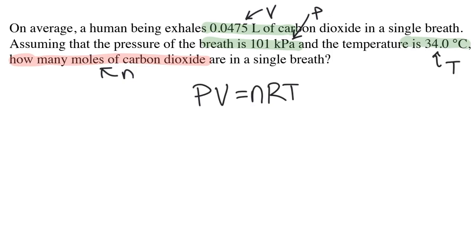We're using the ideal gas law to solve this problem: PV equals NRT. We're solving for N, so I'll rearrange the equation by dividing both sides by RT. That changes the equation to N equals PV over RT.